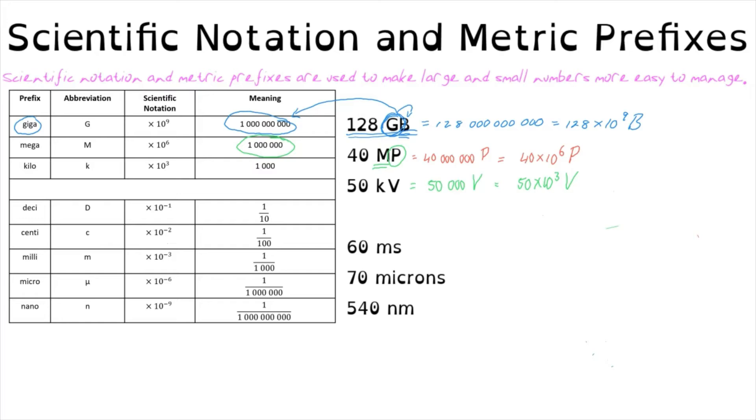Again, where we can write it out as 40 million or we can simplify it to say that those six zeros can be represented by a 10 to the power of six.